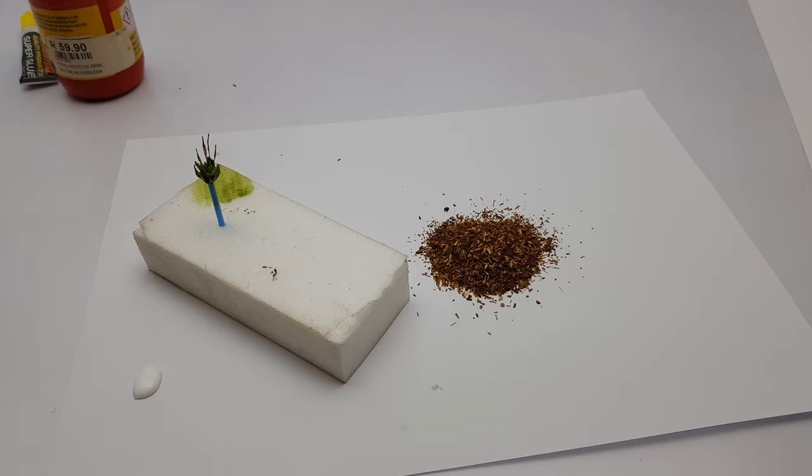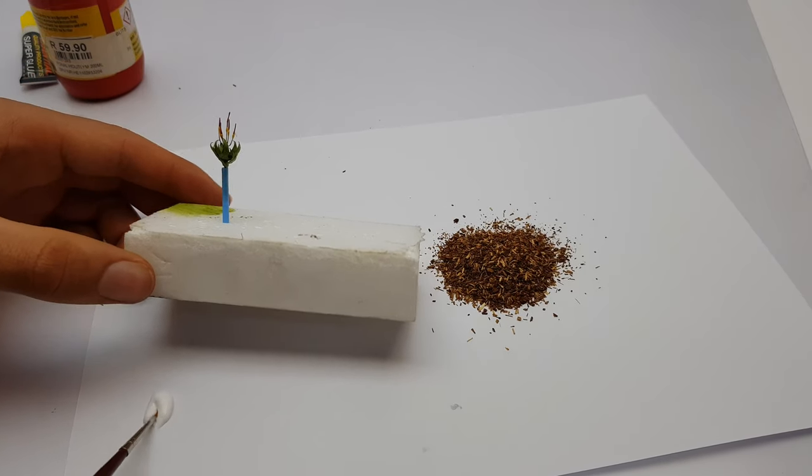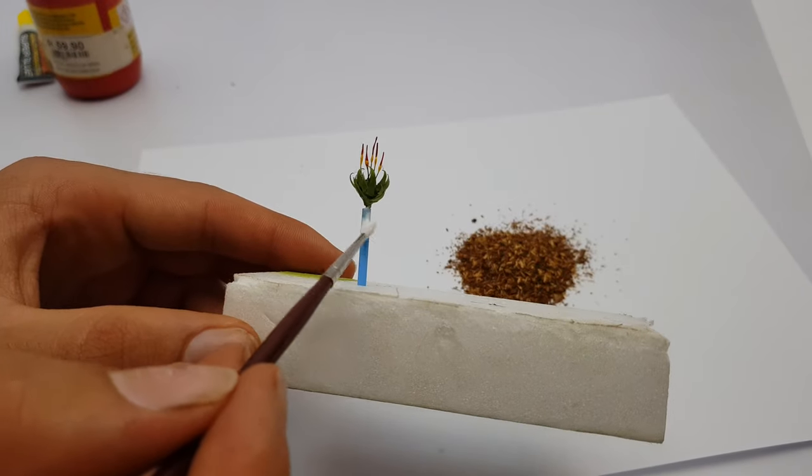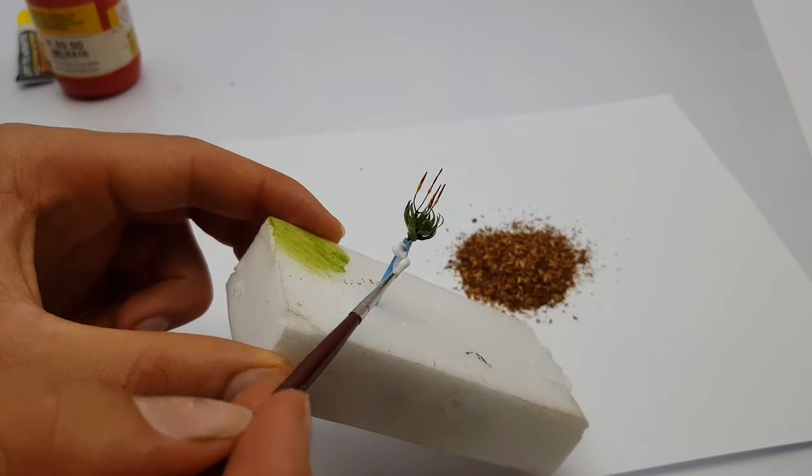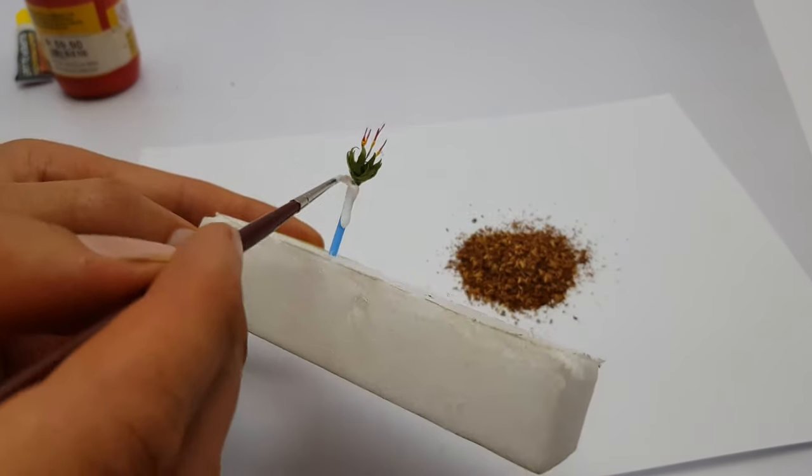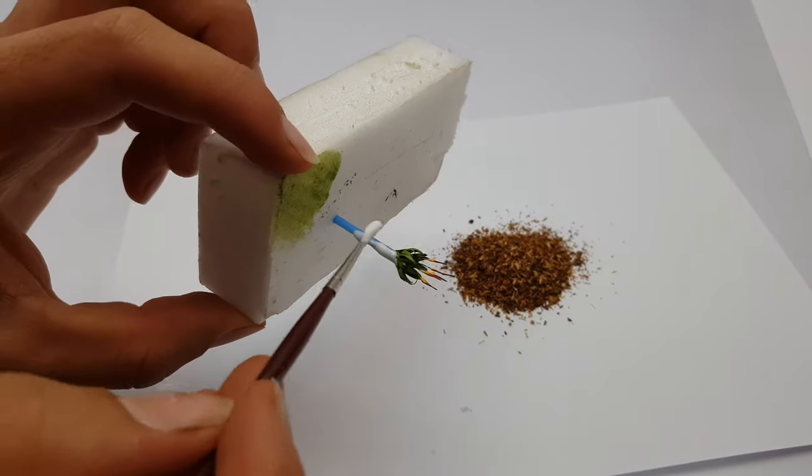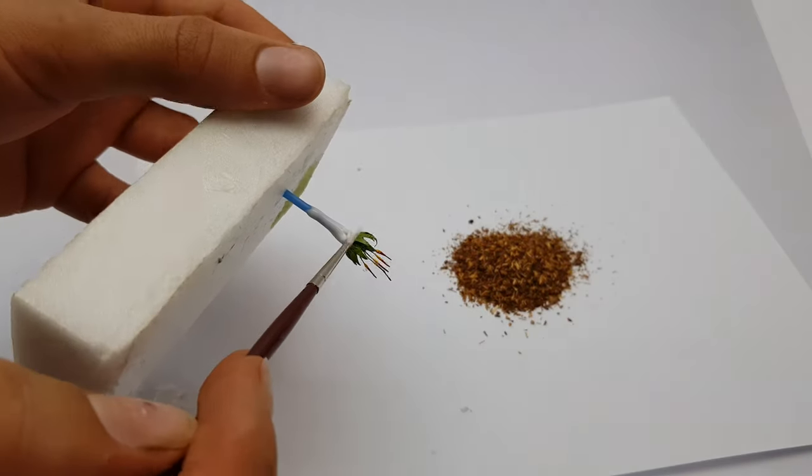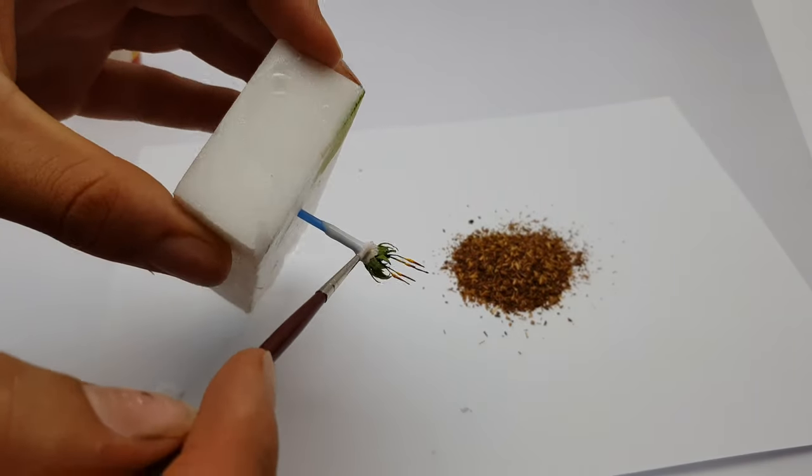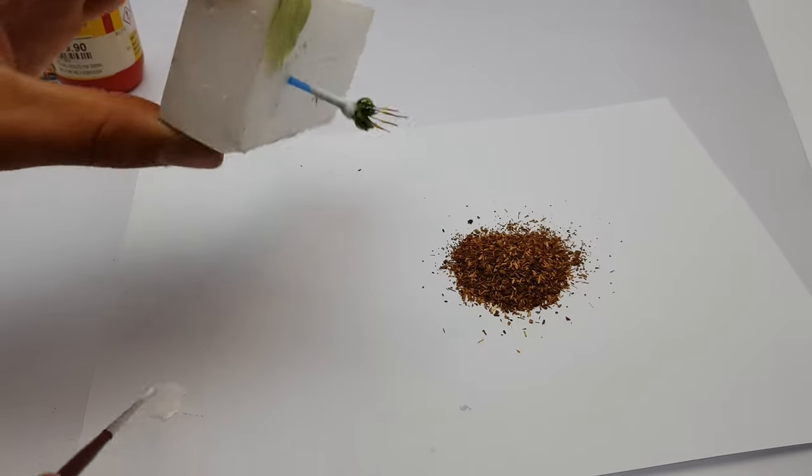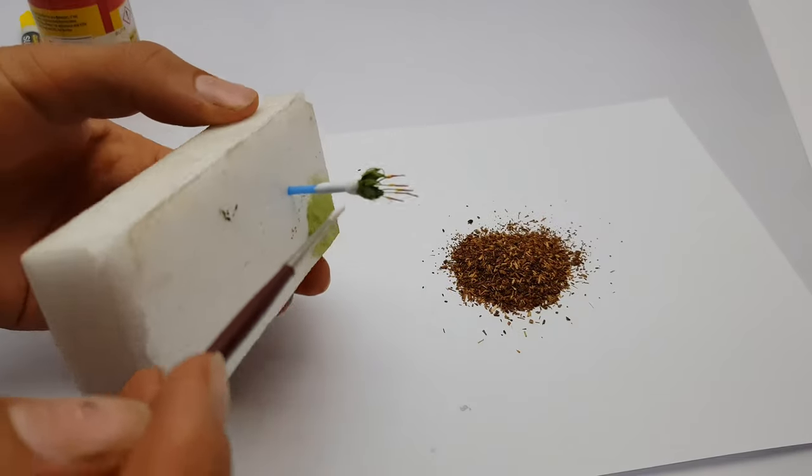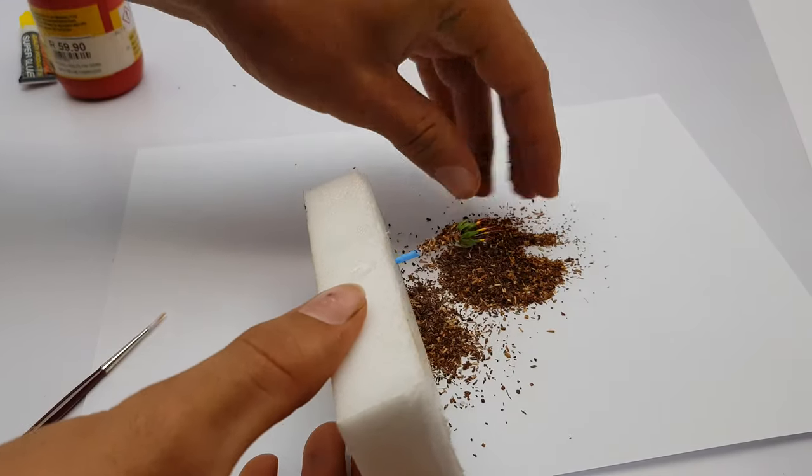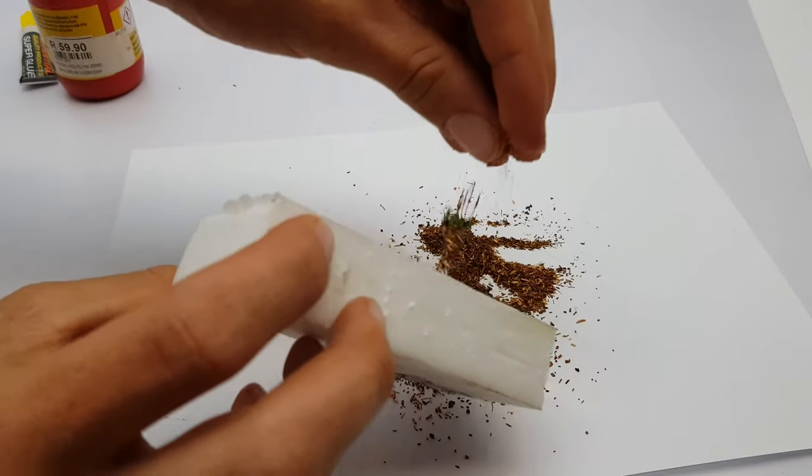I've found that PVI glue works the best for gluing the dead leaves onto the stem of the aloe. Then it's as simple as sprinkling the tea onto the glue using your fingers.